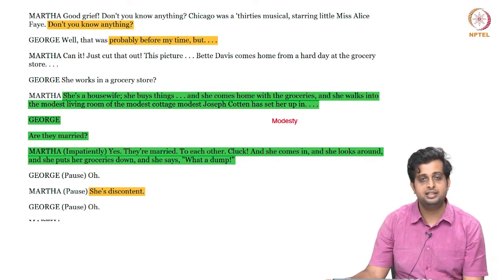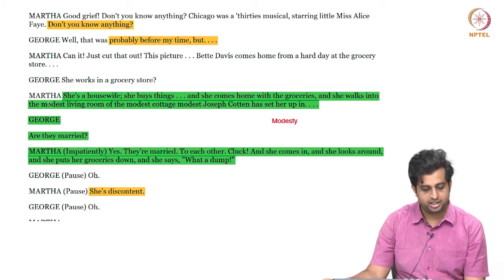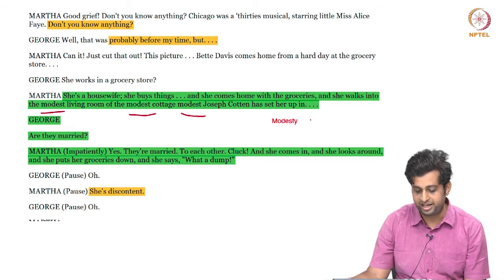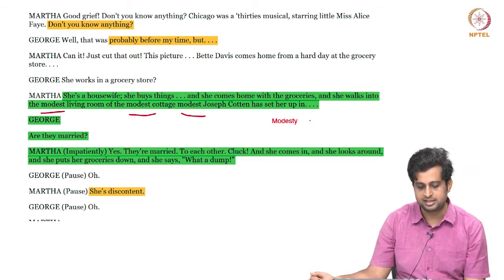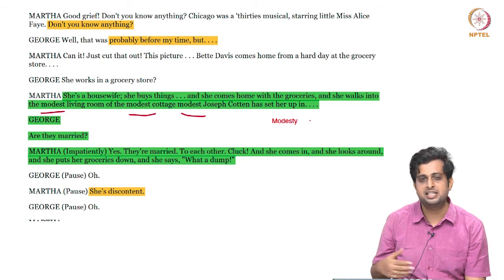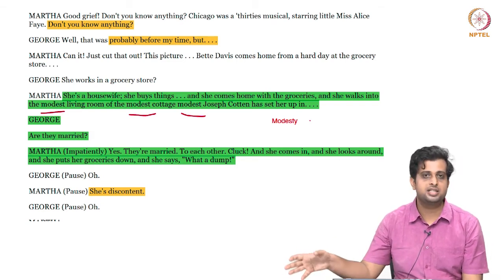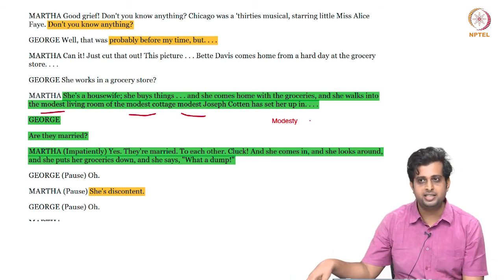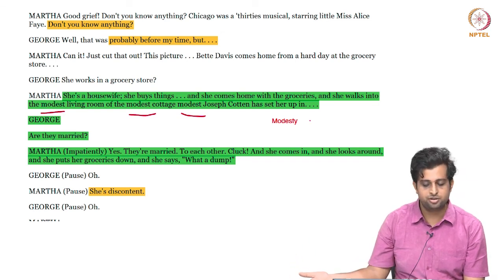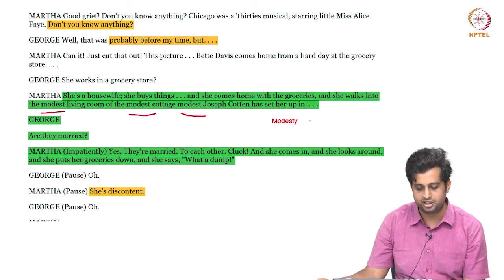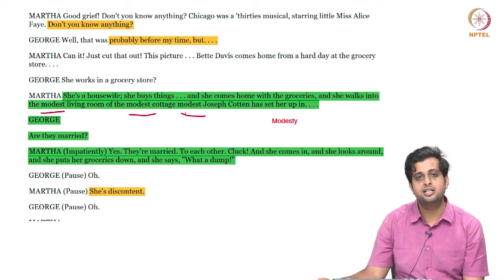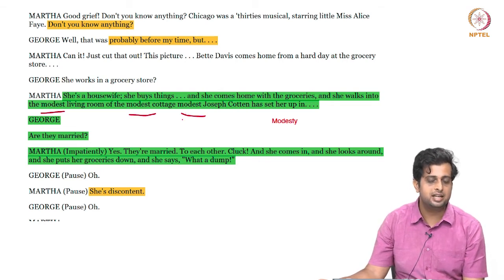Martha describes the Bette Davis character walking into the 'modest living room of the modest cottage.' There is a continuous reference to modesty throughout. As we read through the play, there have been many charges of immodesty, immorality, and vulgar language leveled against it over the years. Albee discusses this idea of modesty through Martha — this is a play where modesty does not hold much importance, a world where propriety and a sense of self do not survive the ugly fights and games the couples play.